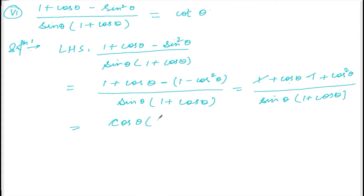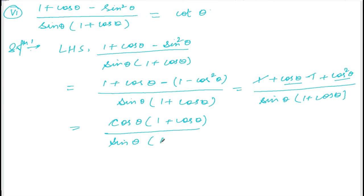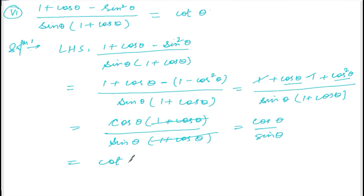After taking cosθ common, we get cosθ(1 + cosθ) in the numerator and sinθ(1 + cosθ) in the denominator. The (1 + cosθ) terms cancel, leaving cosθ divided by sinθ, which equals cotθ — the right hand side. Hence proved.